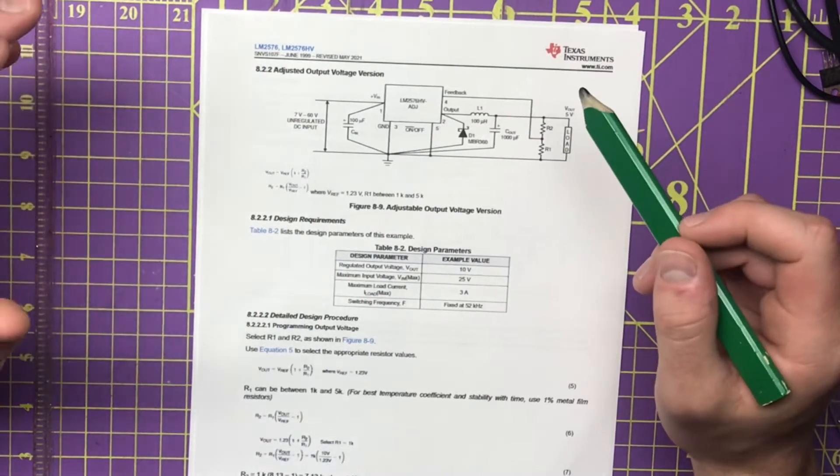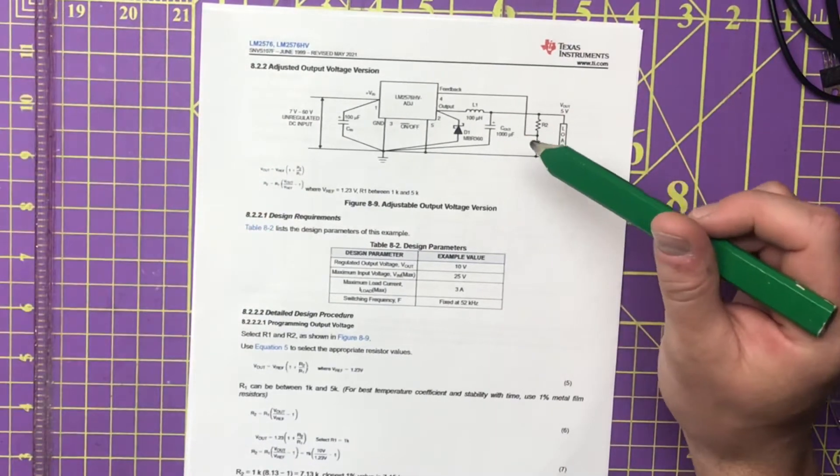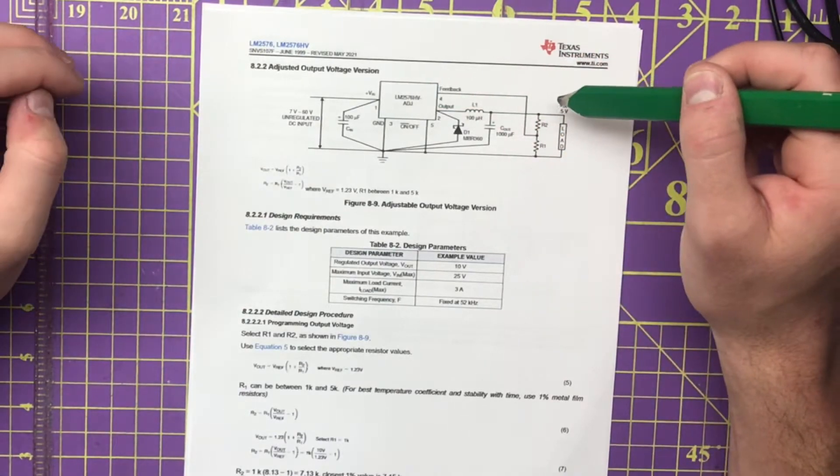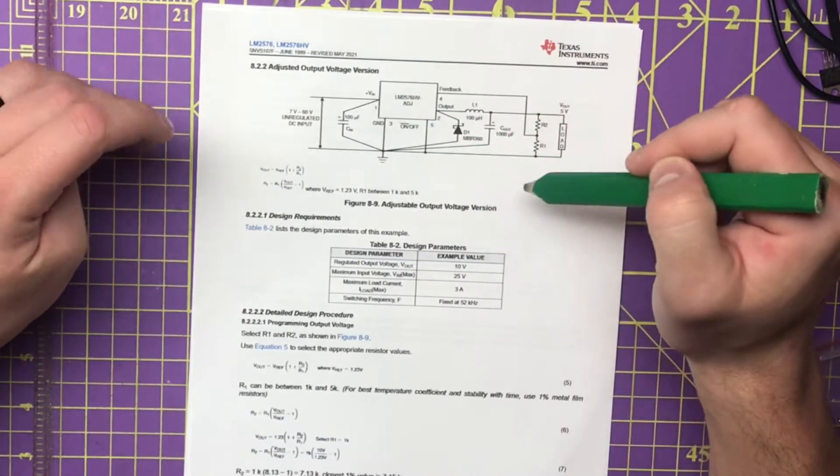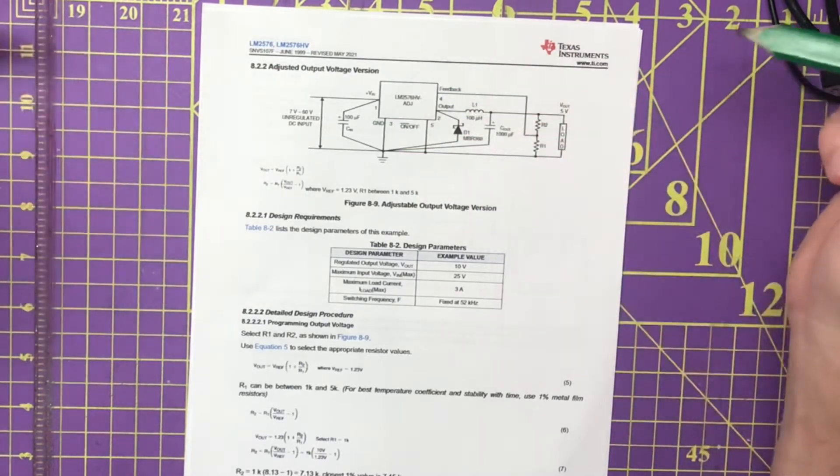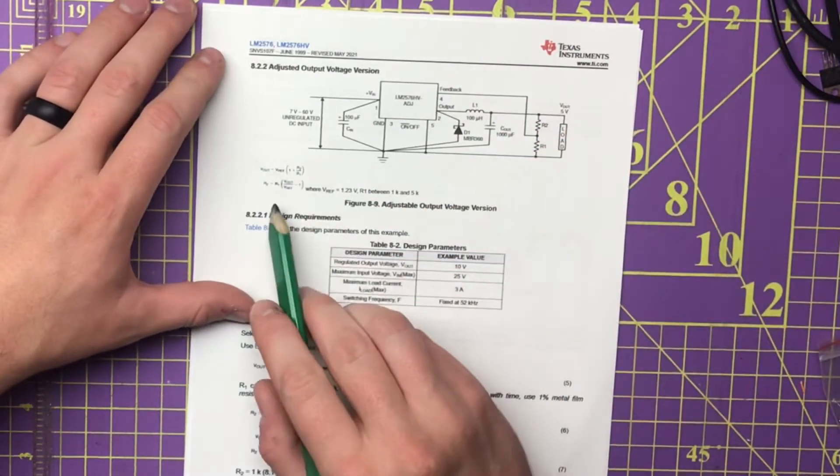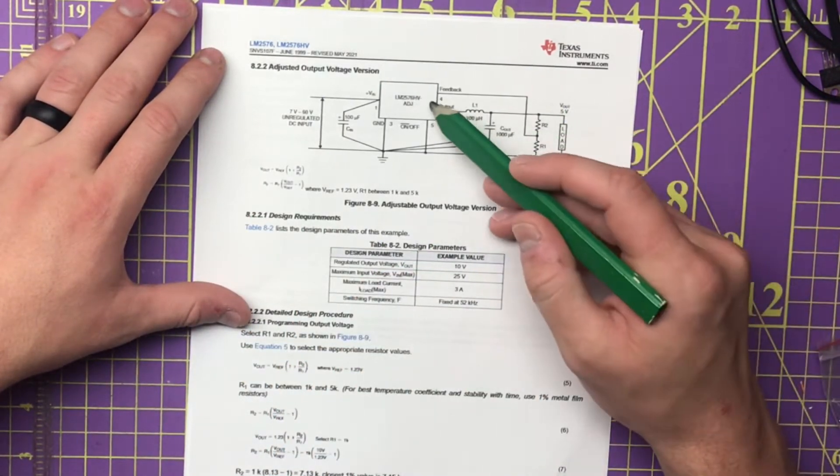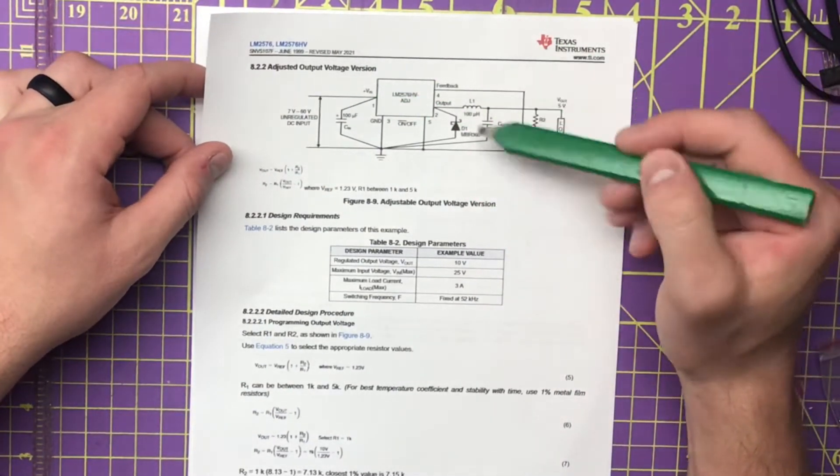What we're going to do here is basically use an LM2576 as our tracking pre-regulator. This right here is the circuit for the LM2576 from the datasheet. They give you how to find R1 and R2 here if you ever want to use this chip. We're basically just going to copy and paste this circuit.